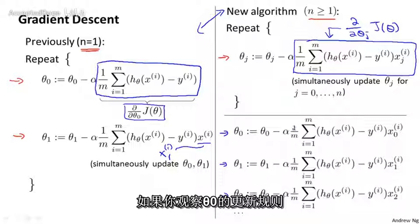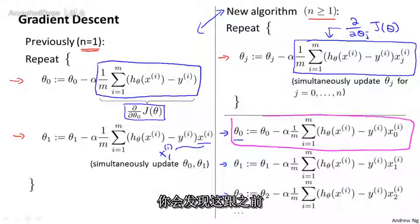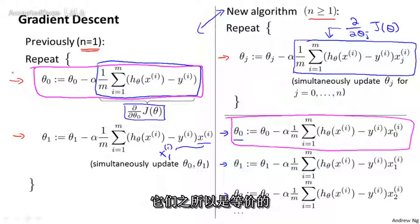If you look at the update rule for theta 0, what you find is that this update rule here is the same as the update rule that we had previously for the case of n equals 1. And the reason that they're equivalent is, of course, because in our notational convention, we had this x0 equals 1 convention.